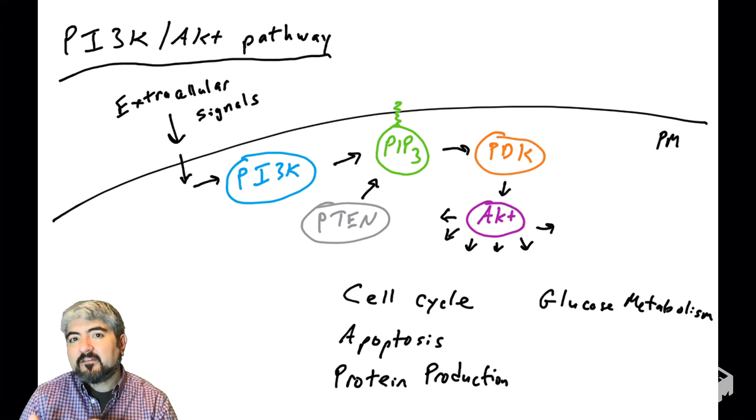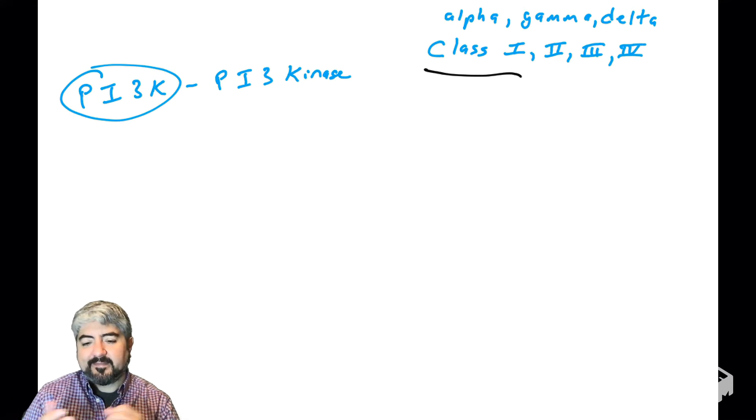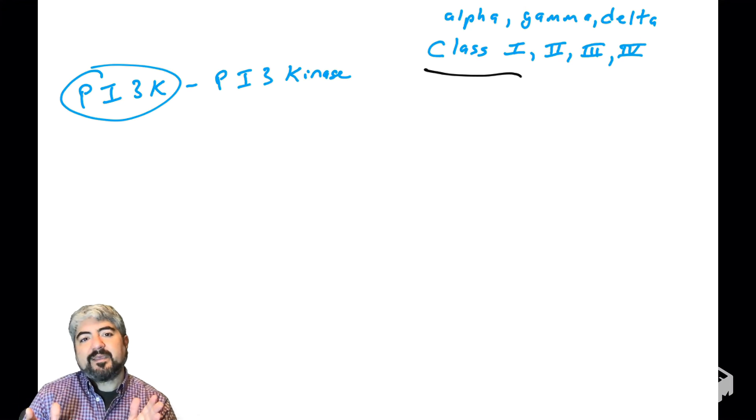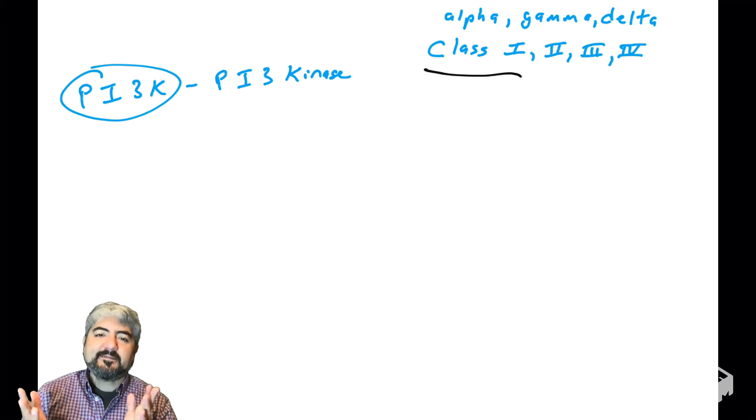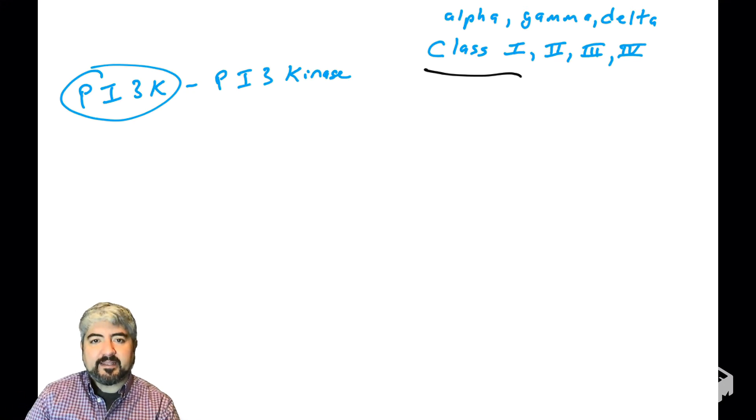So let's talk about what PI3 kinase is made of and how it is regulated. There isn't just one PI3 kinase in the cell. There could be many different PI3 kinases: class one, class two, class three, class four. There are PI3 kinase alpha, gamma, delta. We're not going to get into all the different kinds because we're going to talk about the general function of PI3 kinase. We're going to talk mostly about PI3 kinase class one version, which regulates cell growth and division and apoptosis, and regulates the AKT pathway.